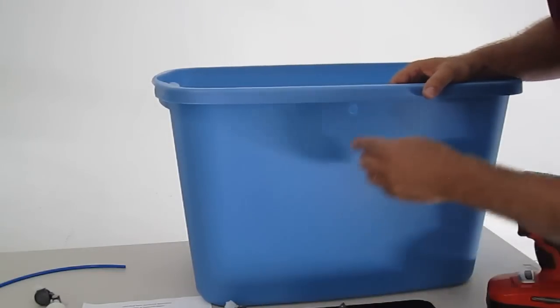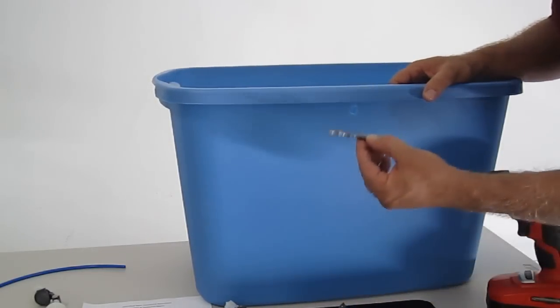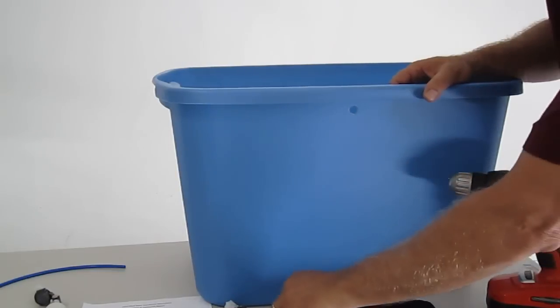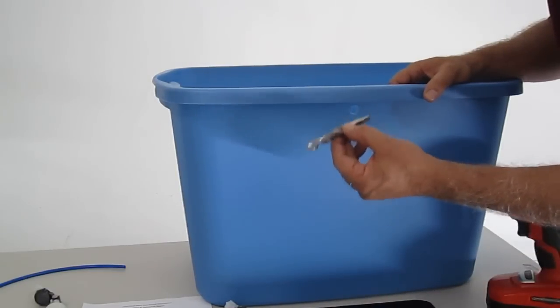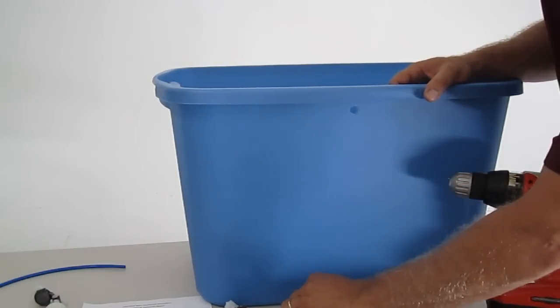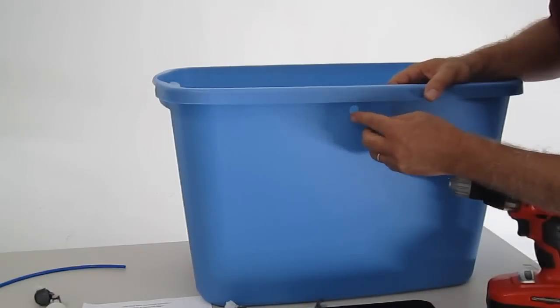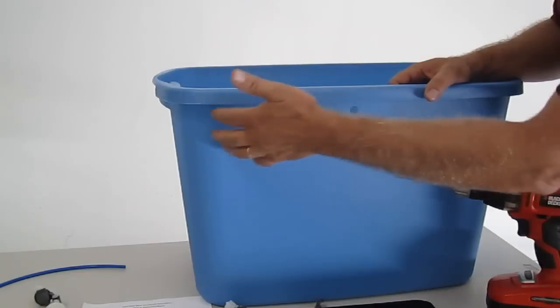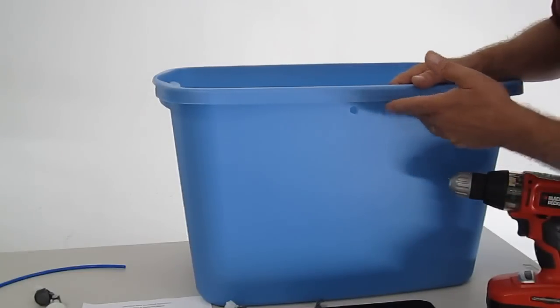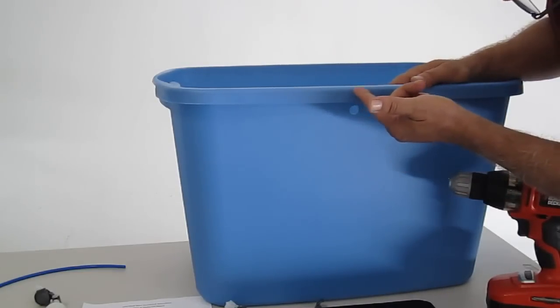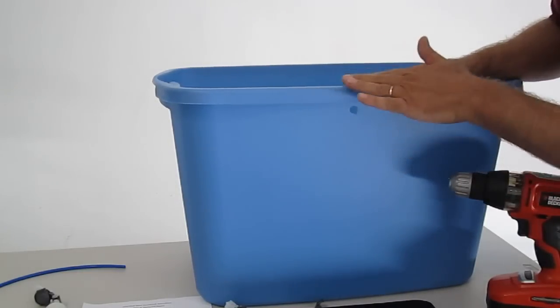So what I did was I already pre-drilled my hole. I started with a quarter inch bit as a pilot and then I followed up with a half inch bit. Once I got that hole drilled, you can pick anywhere on your reservoir you want to install this. That's up to you. I just came down about maybe two inches from the top of the reservoir.